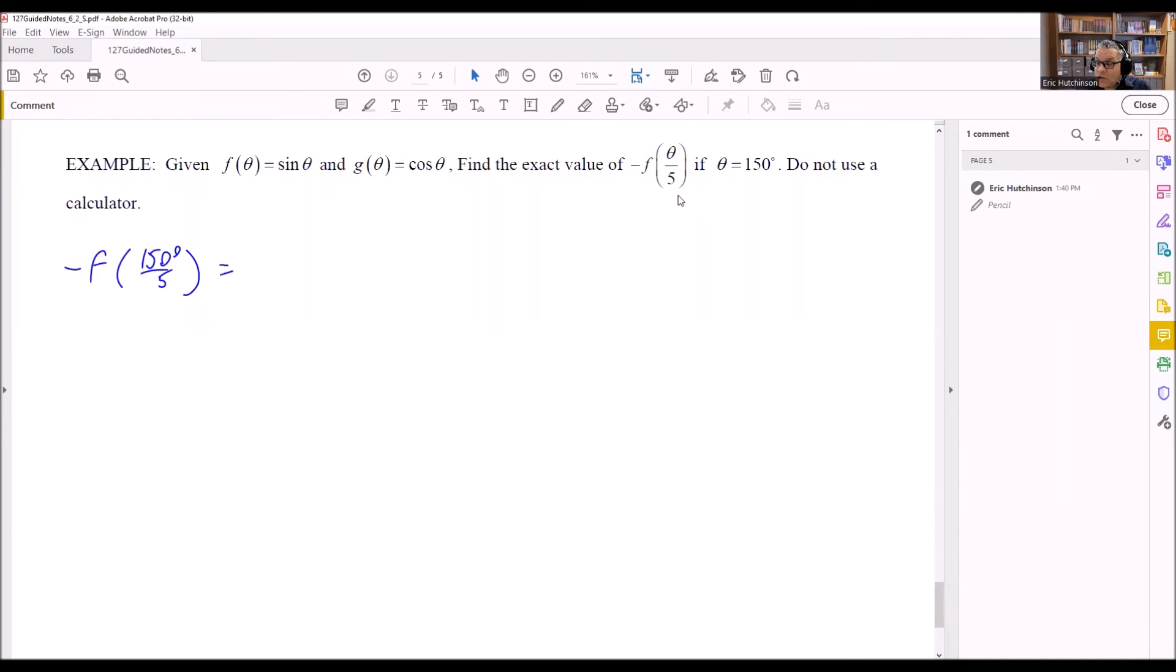And let's simplify this. This is going to turn into -f(30°). What this really means also with the negative out front, that really means -1 times f(30°). So what we can do is figure out what f(30°) is, and then we'll just multiply it by -1, and that's what this notation means. Well, to find f(30°), what that means is we have to put 30 in this theta, which means now we're doing sin(θ).